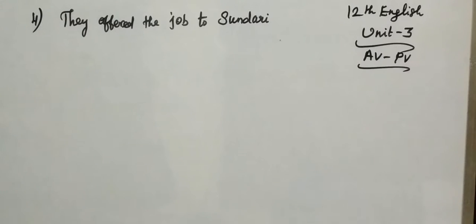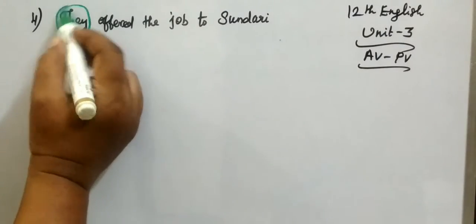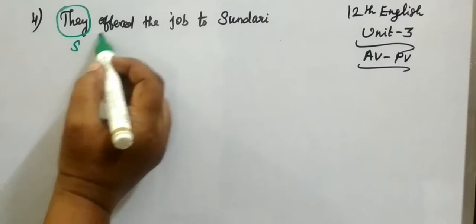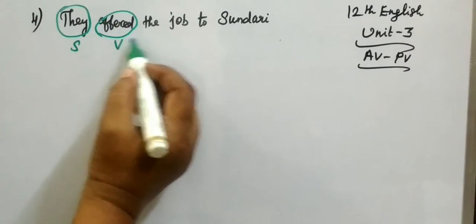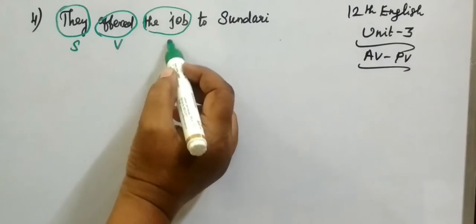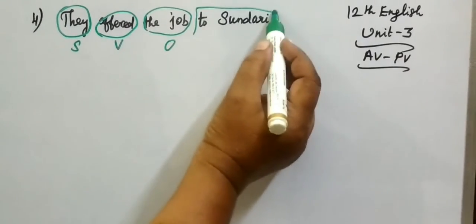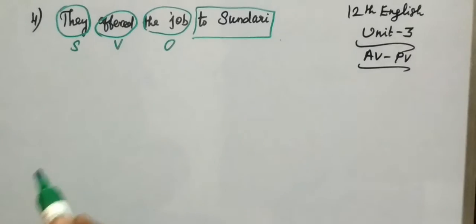They offer the job to Sundari. Here, 'they' is the subject, 'offered' is the verb, 'the job' is the object, and 'to Sundari' is extra information.